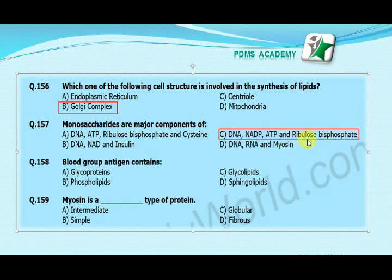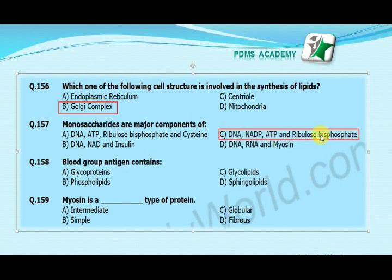In option A, insulin is present which is a protein and not a monosaccharide. In option B, insulin is present which is protein in nature and not a carbohydrate. In option D, myosin is present which is a fibrous protein. So the correct answer is C: DNA contains ribose sugar, NADP contains ribose sugar, ATP also contains ribose sugar, and ribulose bisphosphate is itself a carbohydrate. Blood group antigen contains: option A glycoproteins, option B phospholipids, option C glycolipids, option D sphingolipids.